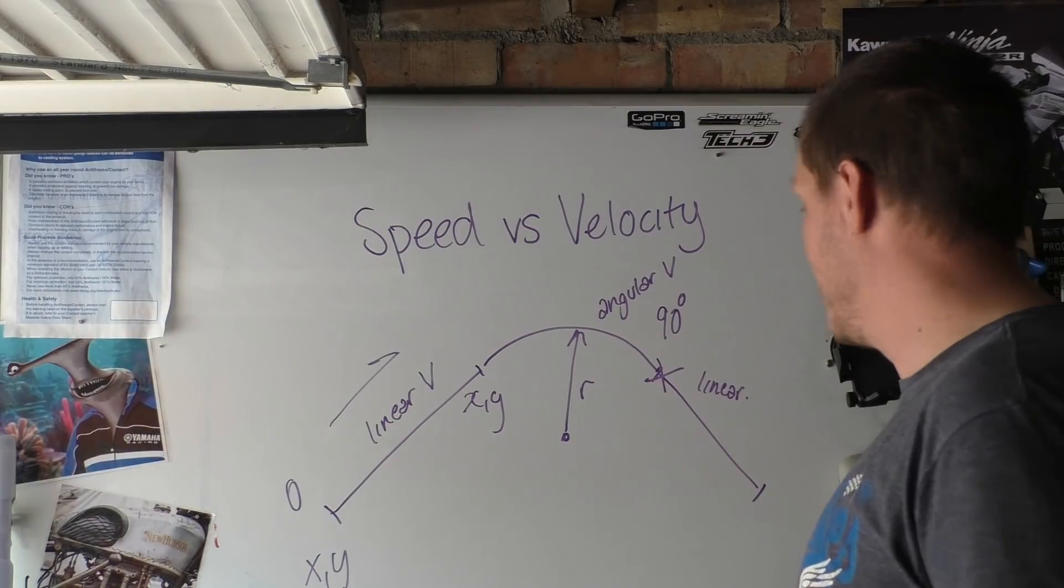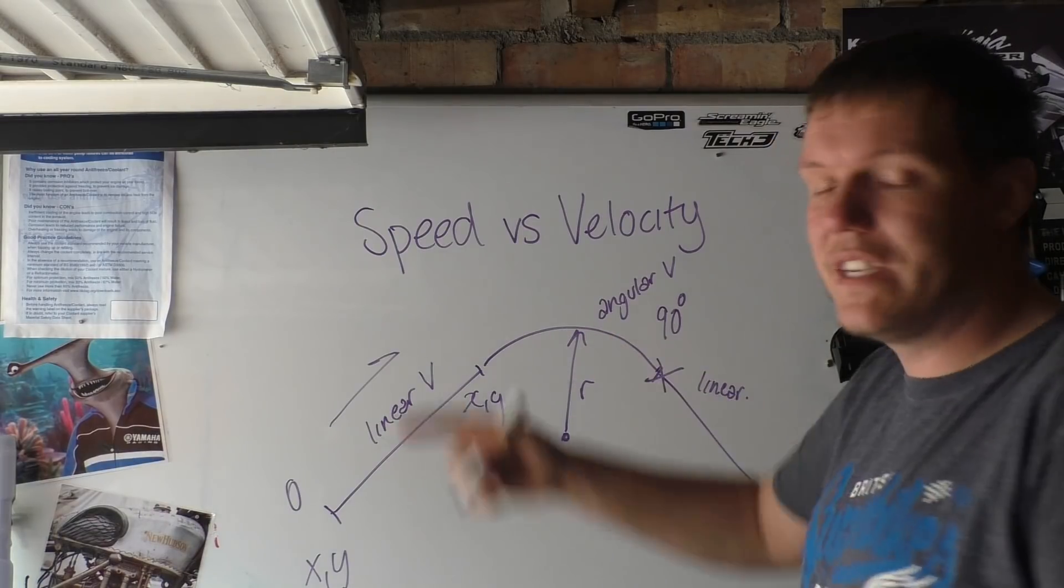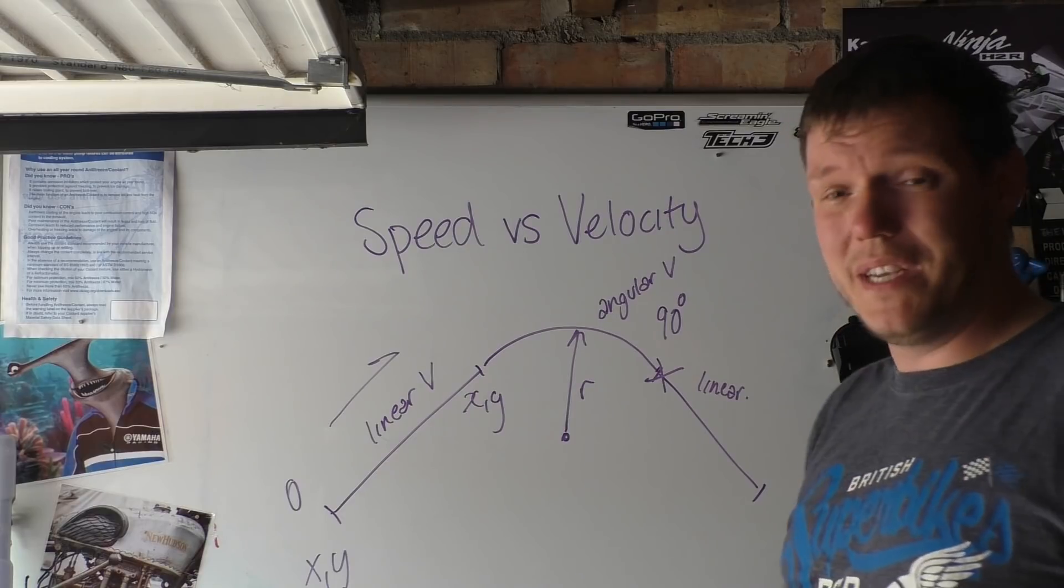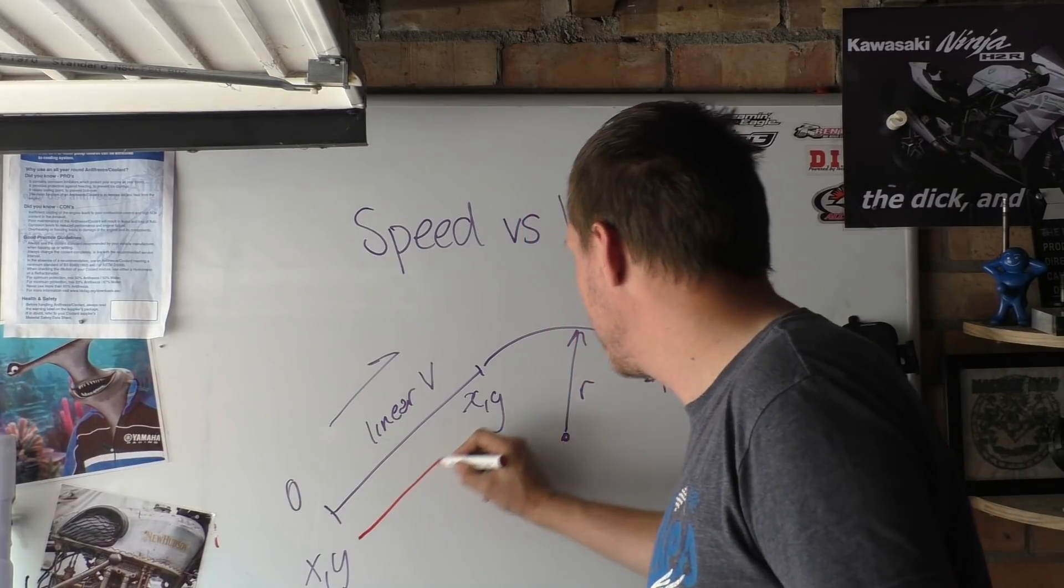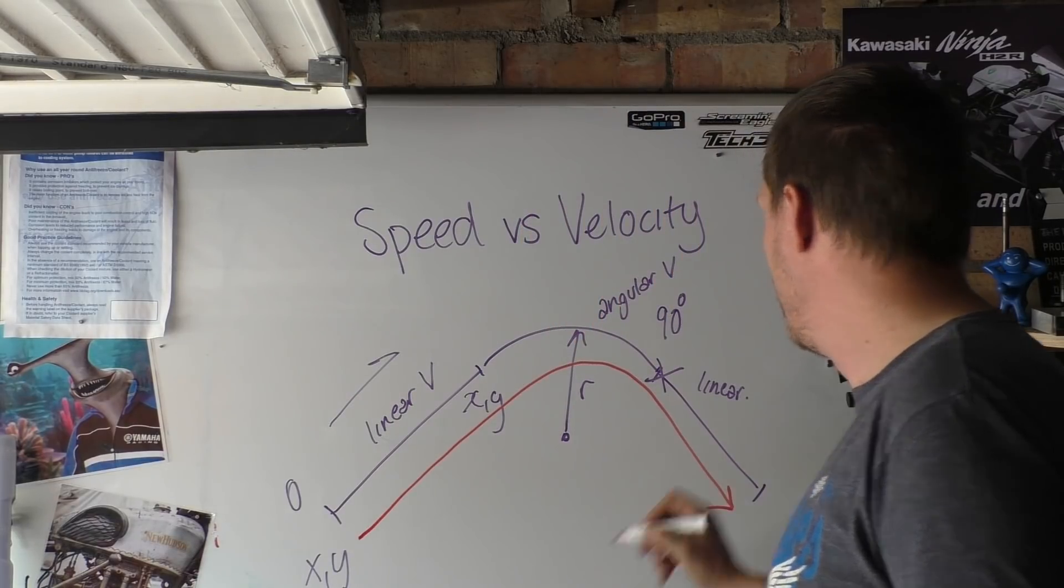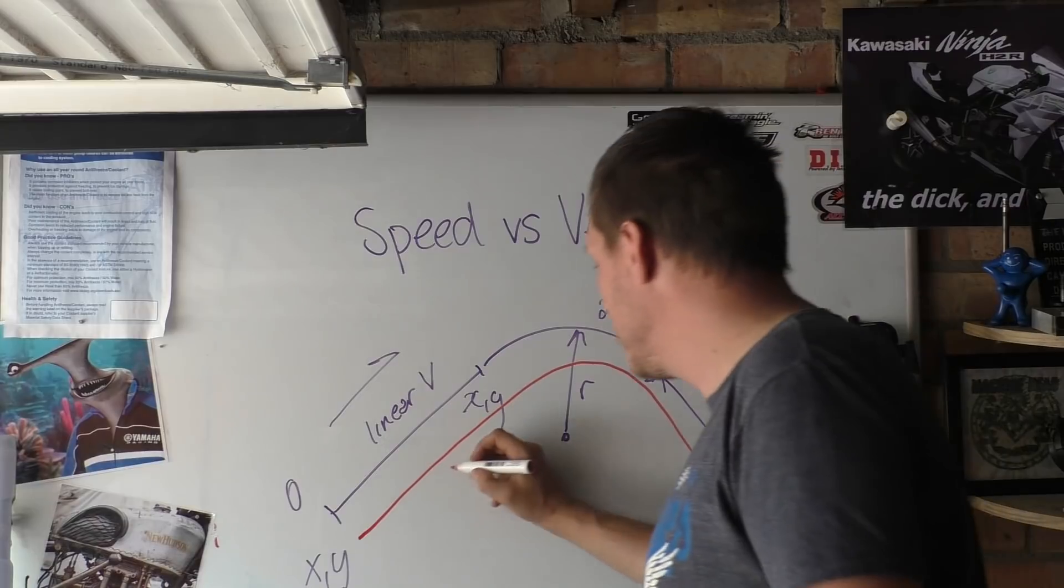And then you've got your linear direction here because you've got degrees and you've got everything chucked in. With speed it's a scalar quantity. So basically you go around this entire corner and it's how long this is, a distance, this is a distance here.